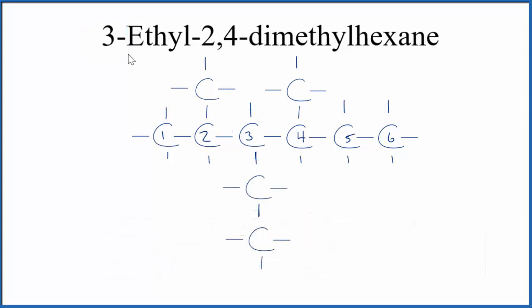So this is the structure for 3-ethyl-2,4-dimethylhexane. We have our hexane, that's the longest chain. We have the two methyl groups, CH3. On the second and the fourth, right here are two methyl groups.